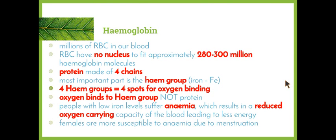Hemoglobin is found in our red blood cells. There are millions of red blood cells in our body and their only function is to carry oxygen. As we talked about when looking at the components of blood, unlike our white blood cells, the red blood cells do not have a nucleus. This allows them to hold many hemoglobin molecules. One red blood cell can hold approximately 280 to 300 million hemoglobin molecules.